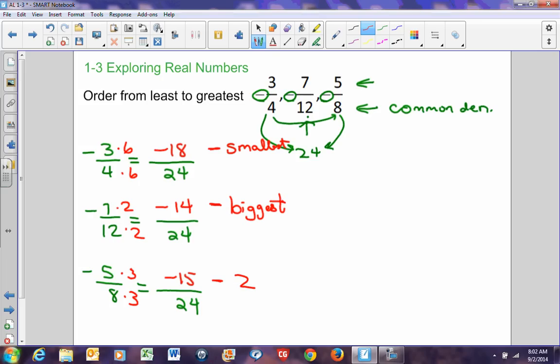When we number them, when we put them in order, we have to put them back in their original form. So, if we're going to move from smallest to biggest, my smallest number is negative 3/4, my number in the middle is negative 5/8, and the number that is the largest is negative 7/12. Always put them back in their original form.